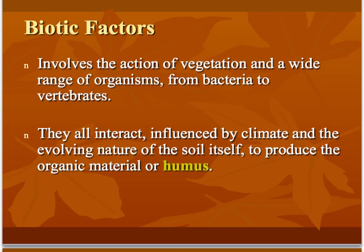The second factor that influences soil formation is the biotic factor — basically the action of any vegetation, plants and organisms using the soil, from bacteria to small mammals and vertebrates. The organisms and vegetation help to produce the organic material in the soil, known as humus. This is usually found on the top layer of the soil, known as the AO horizon, and it can also be mixed into the layer below, known as the A horizon.